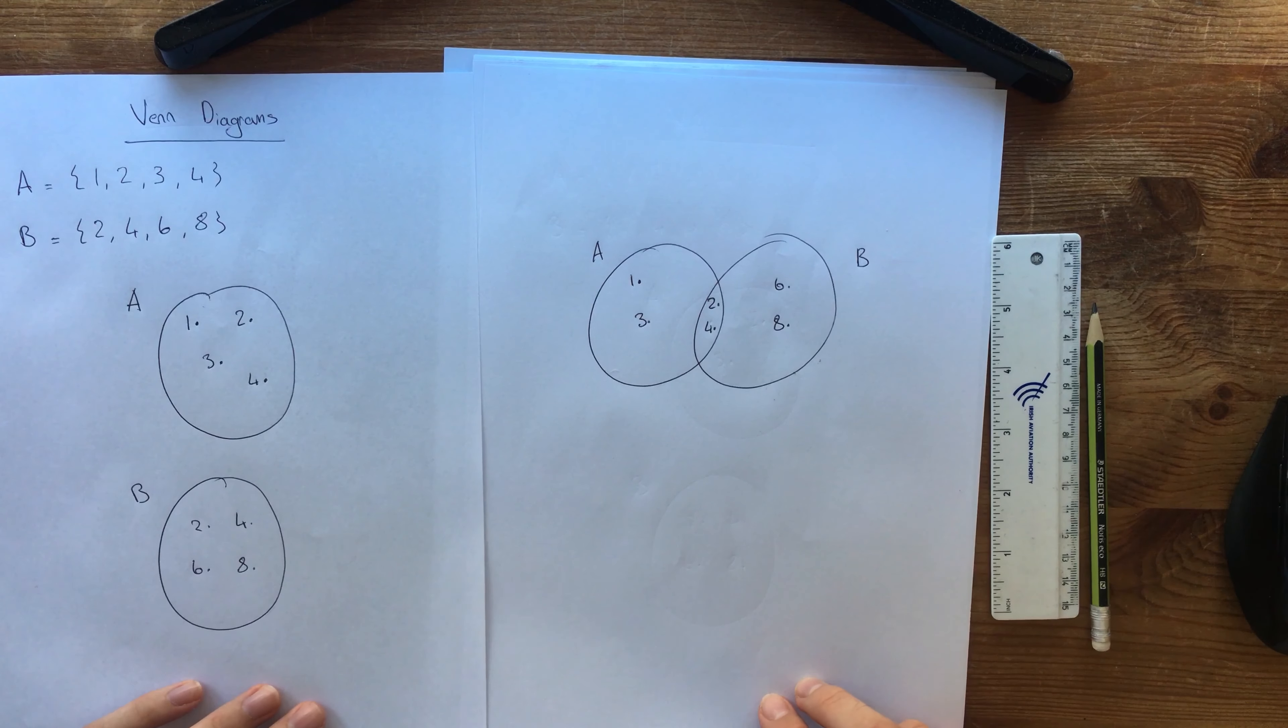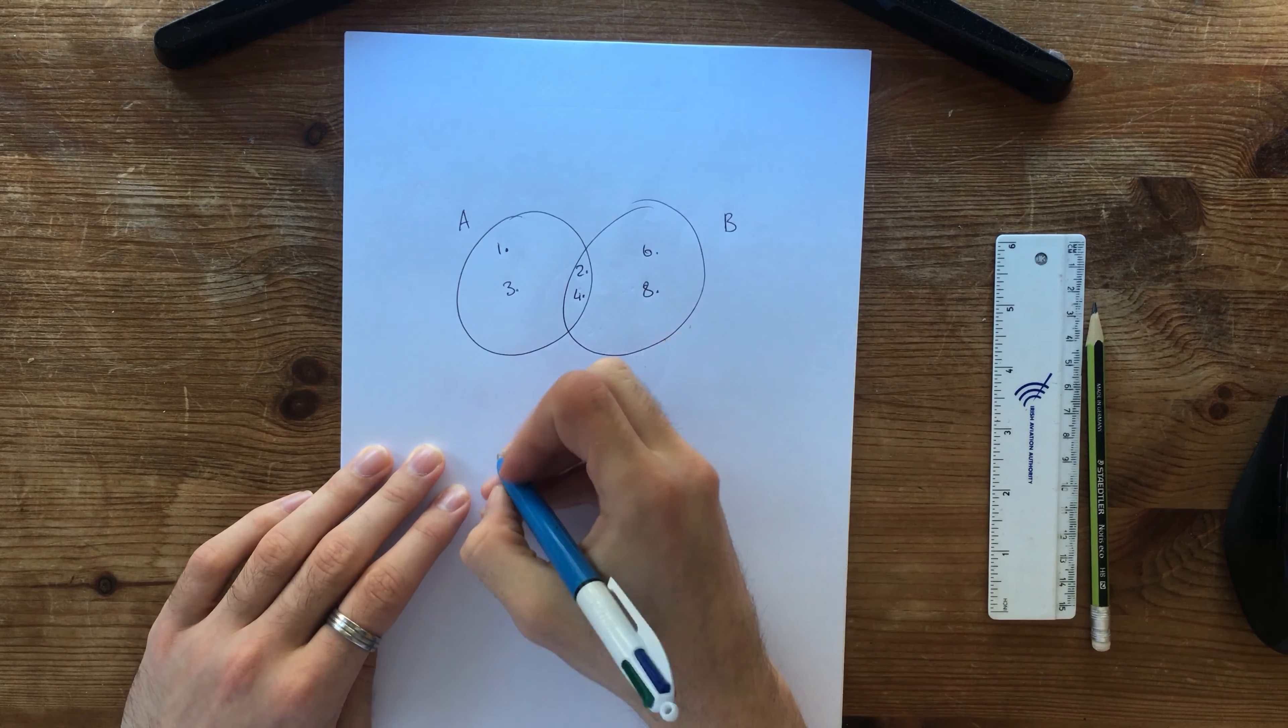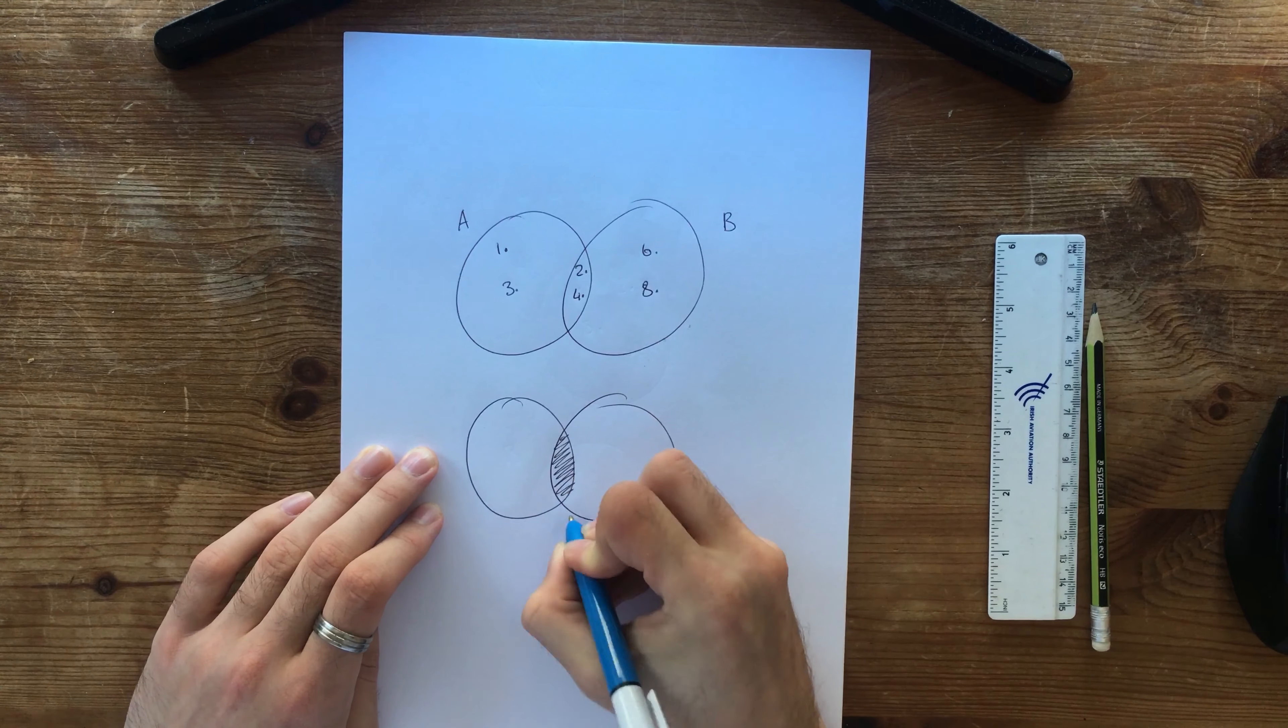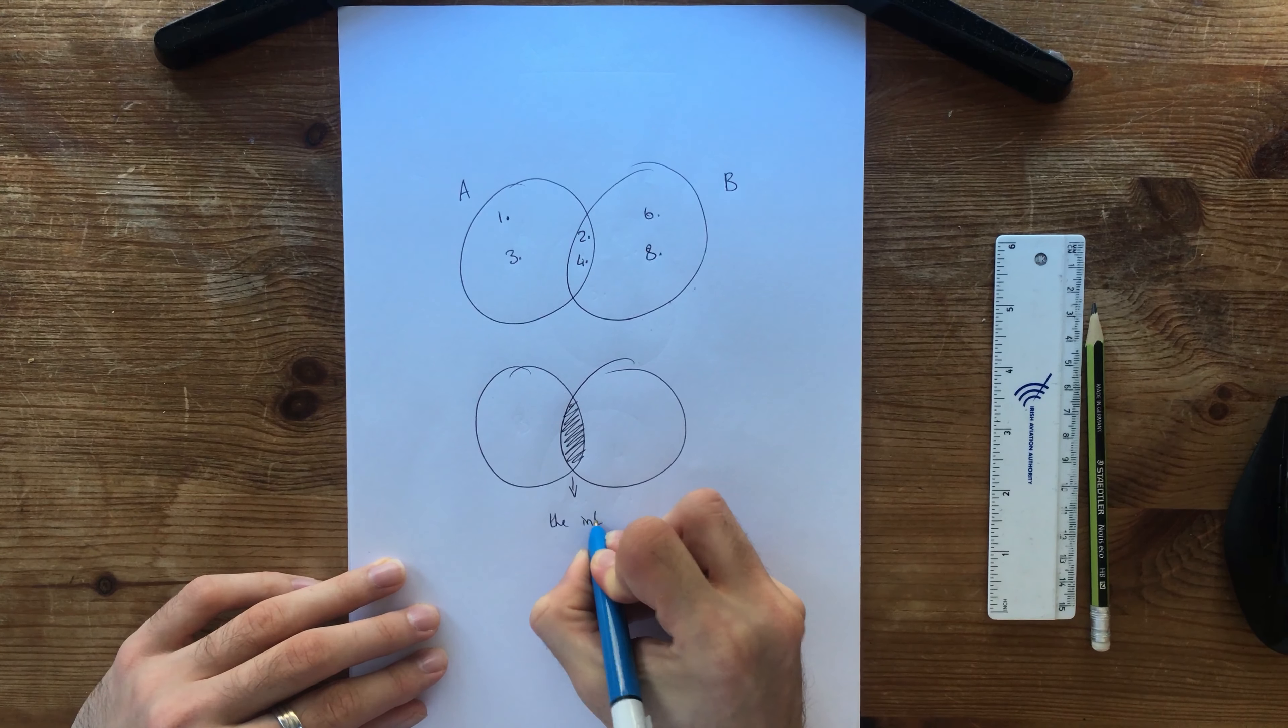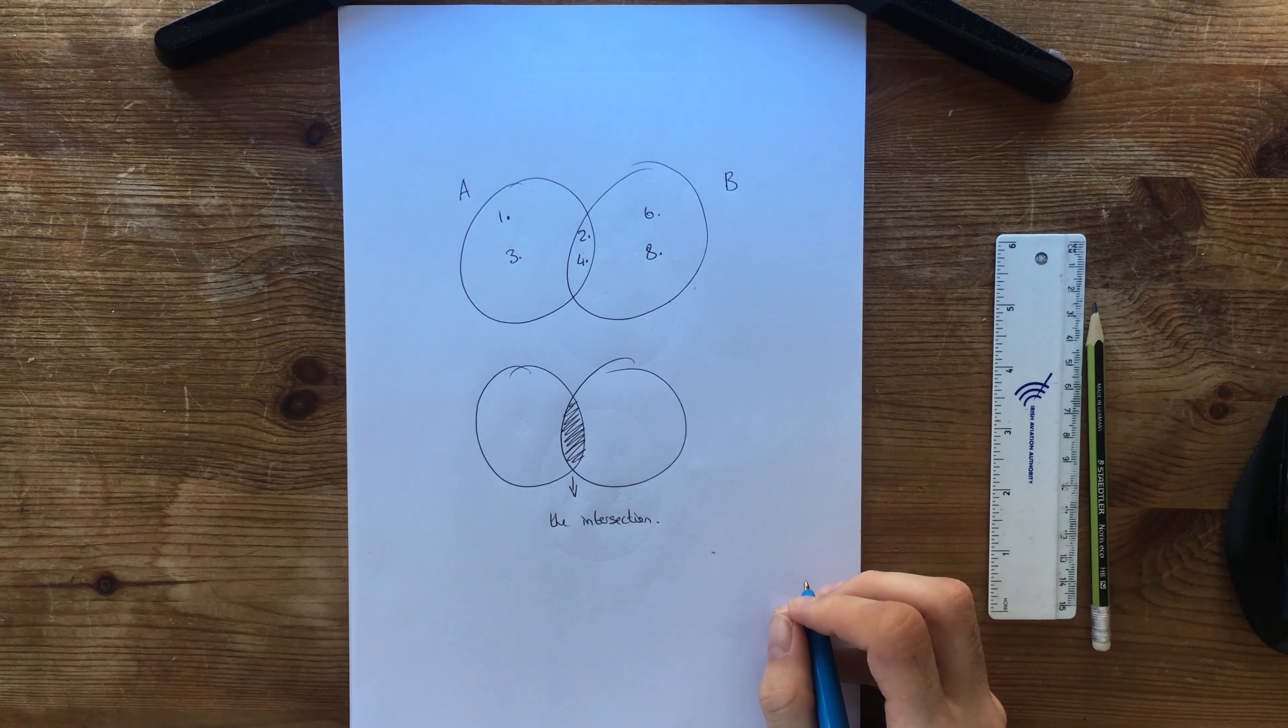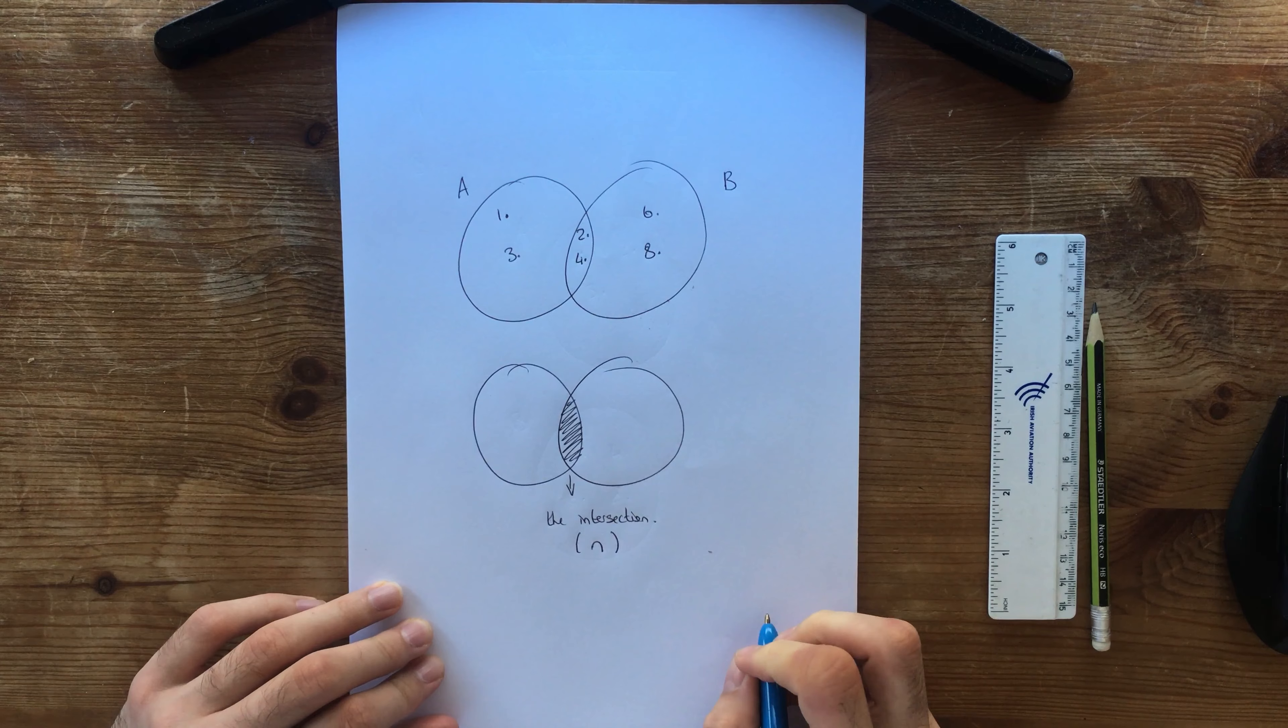Okay, so that's how Venn diagrams work. So now we need to look at what are these things actually called. So if we take just two random sets like this, shade in this part here. The shaded in part here is called the intersection.